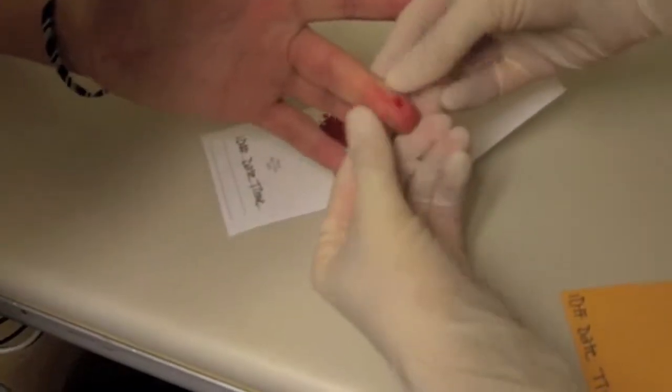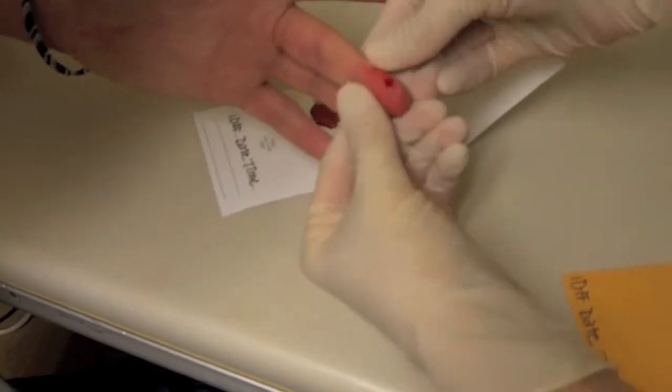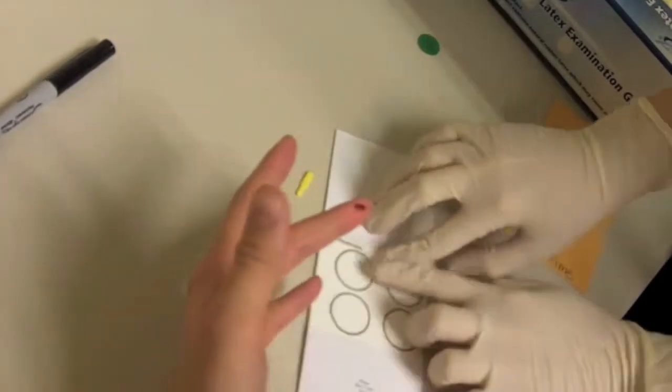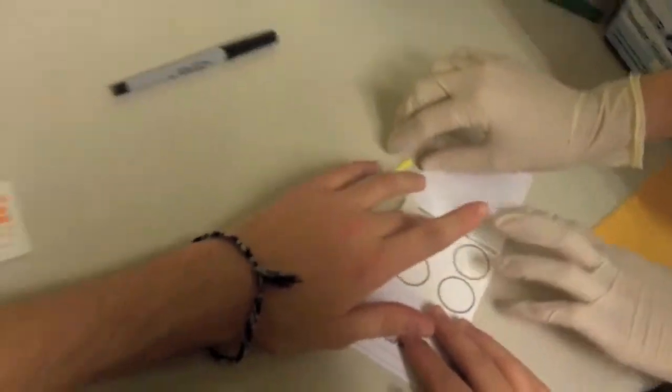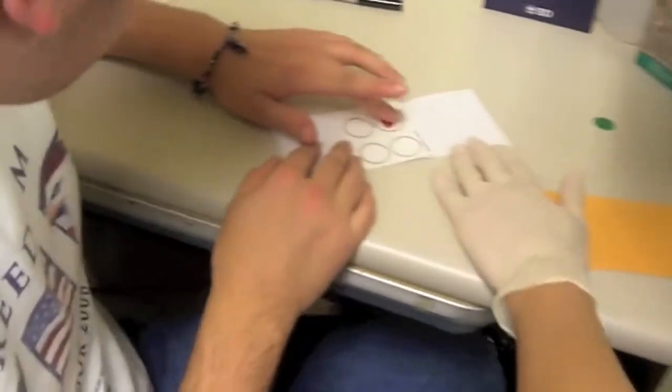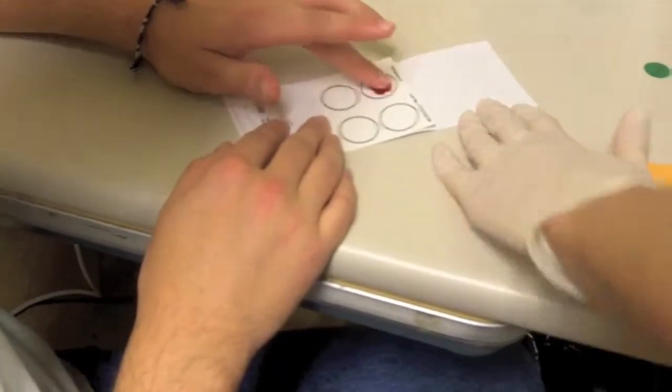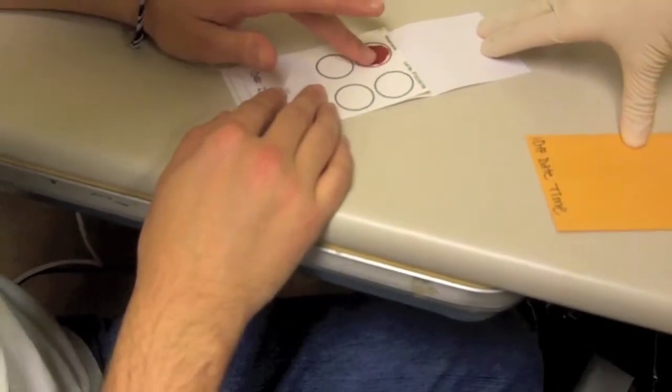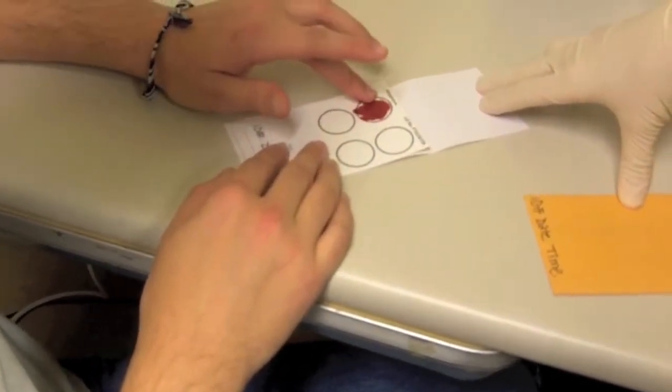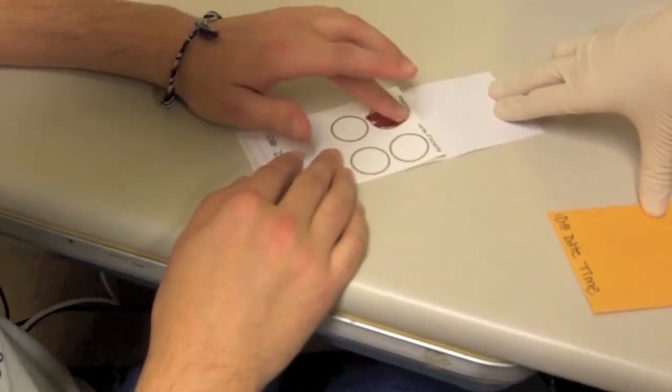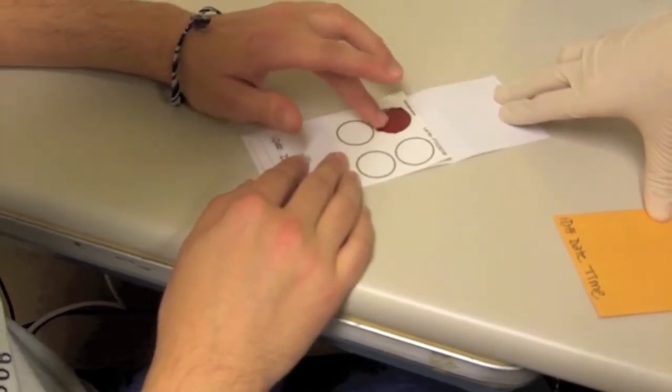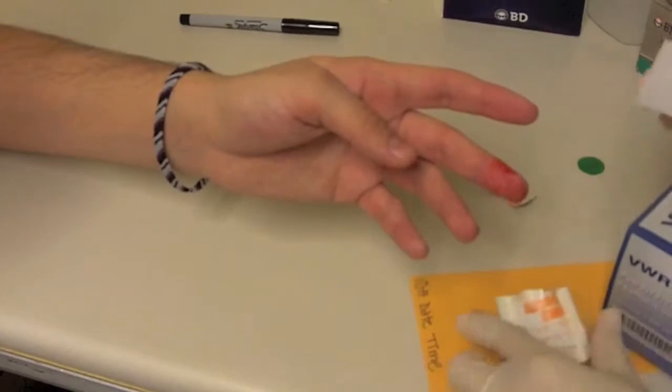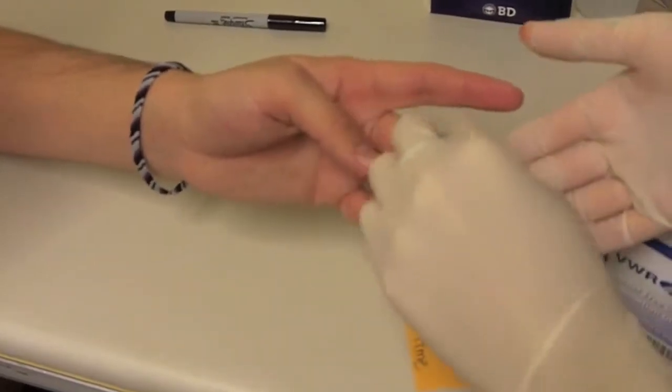Once the participant's finger has been pricked, instruct the participant to begin milking the blood. To do this, take the other hand and pull forward towards the tip of the pricked finger. This should be done slowly as the blood may come out fast. Squeezing the tip of the finger may also achieve the desired effect. As blood drops from the tip, the pricked finger should be dabbed onto the FTA paper inside one of the circles. The participant should repeat the milking action to bring blood forward into the finger and dab it onto the paper. Instruct the participant to fill as much of each of the circles as possible. It is best for all circles to be completely filled in.